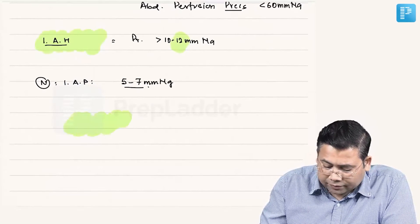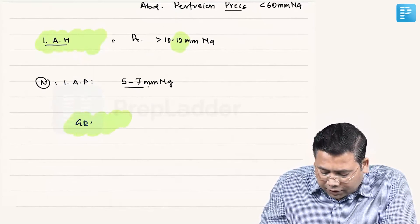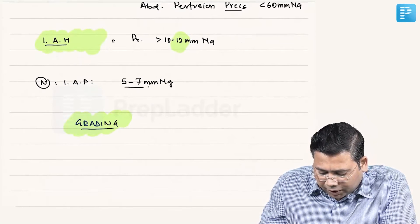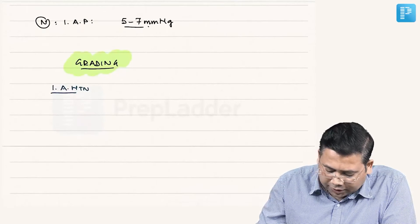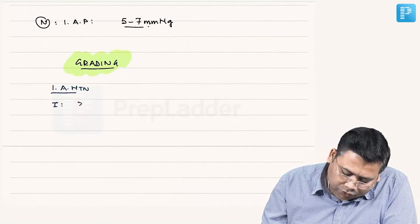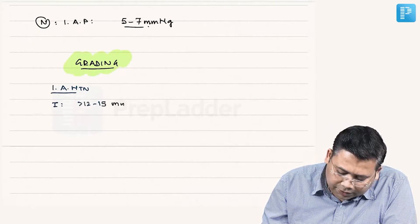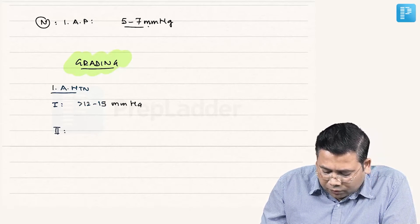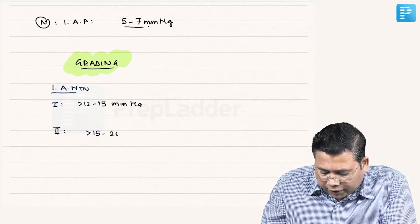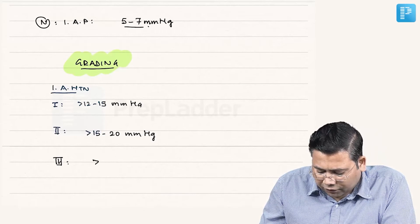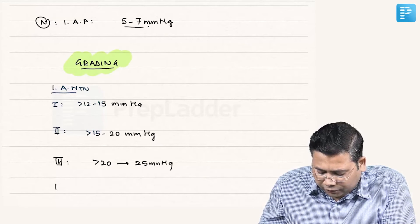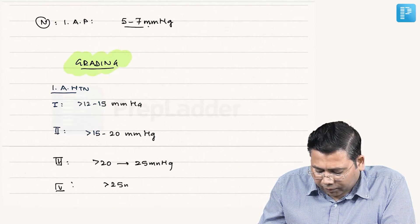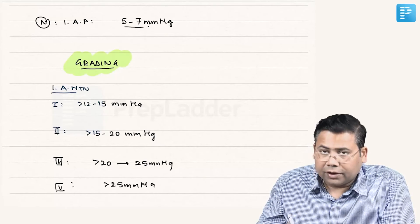Remember the grading of intra-abdominal hypertension (IAH): Grade 1 is more than 12 up to 15 mmHg. Grade 2 is more than 15 up to 20 mmHg. Grade 3 is more than 20 up to 25 mmHg. Grade 4 is more than 25 mmHg.